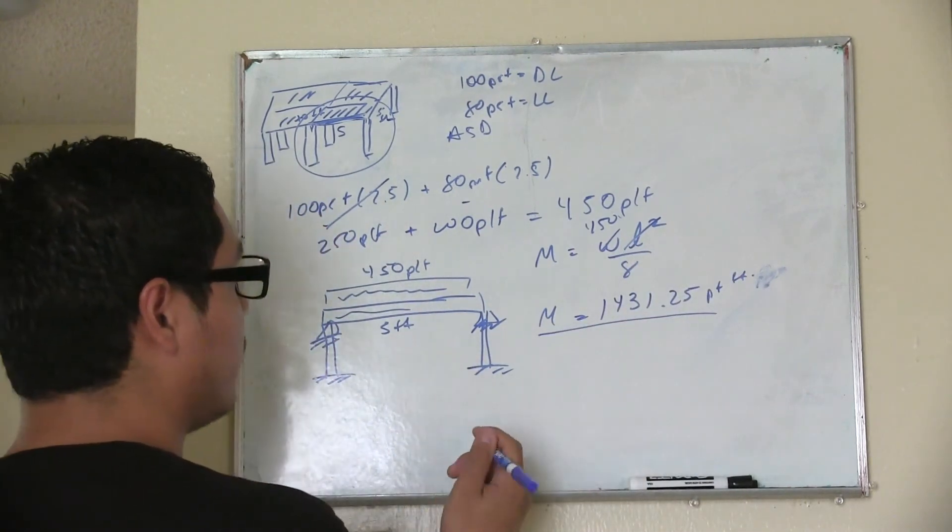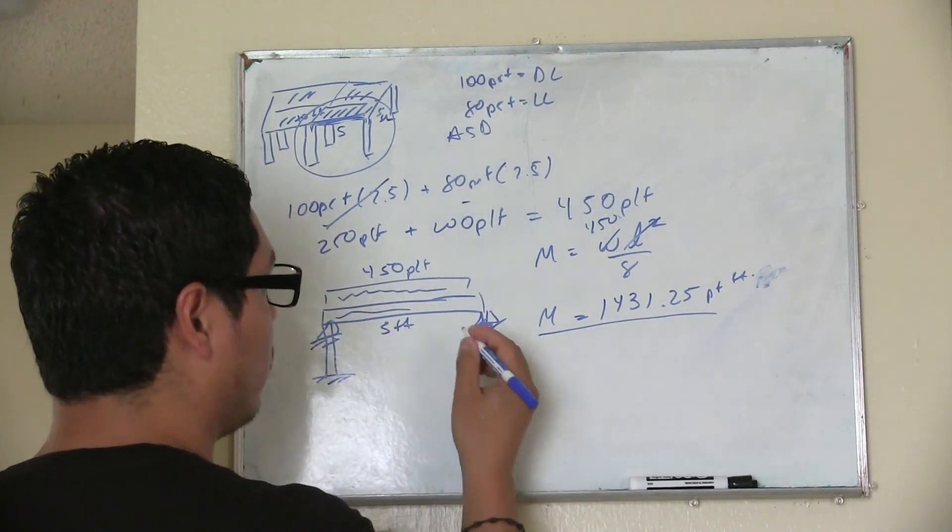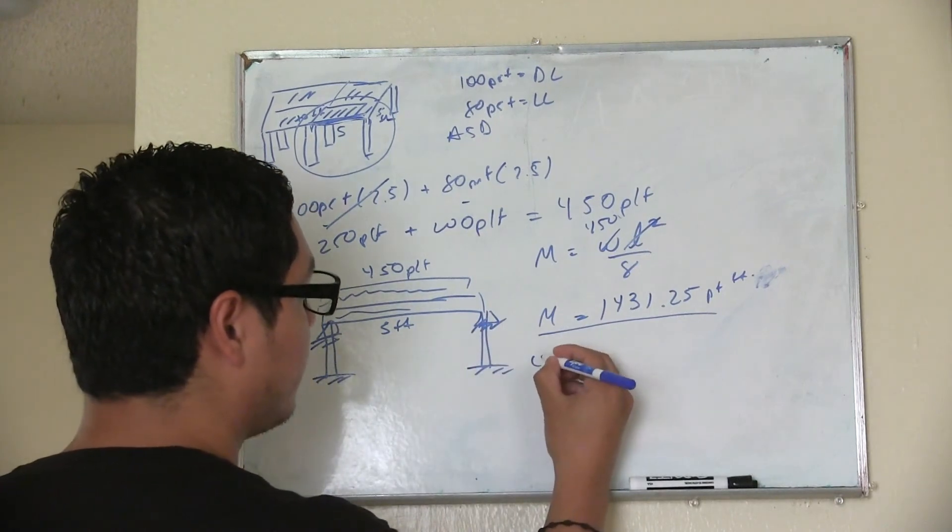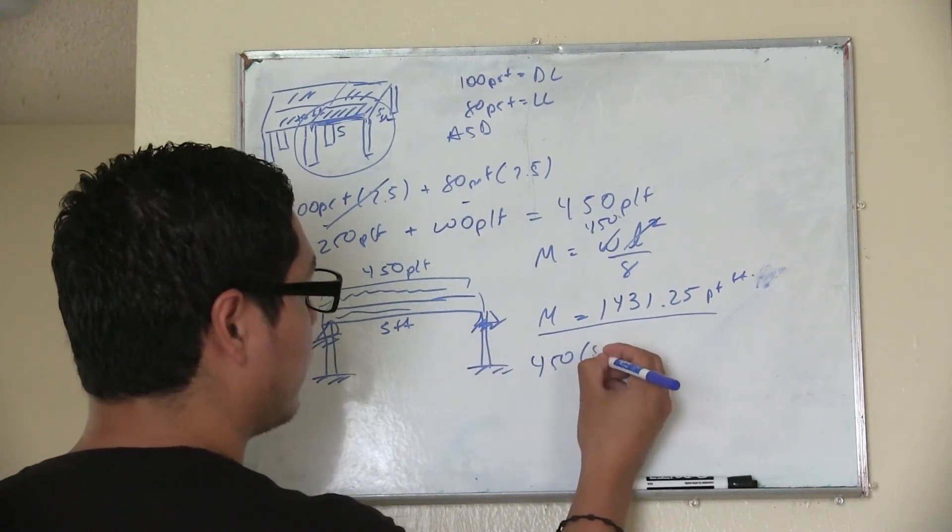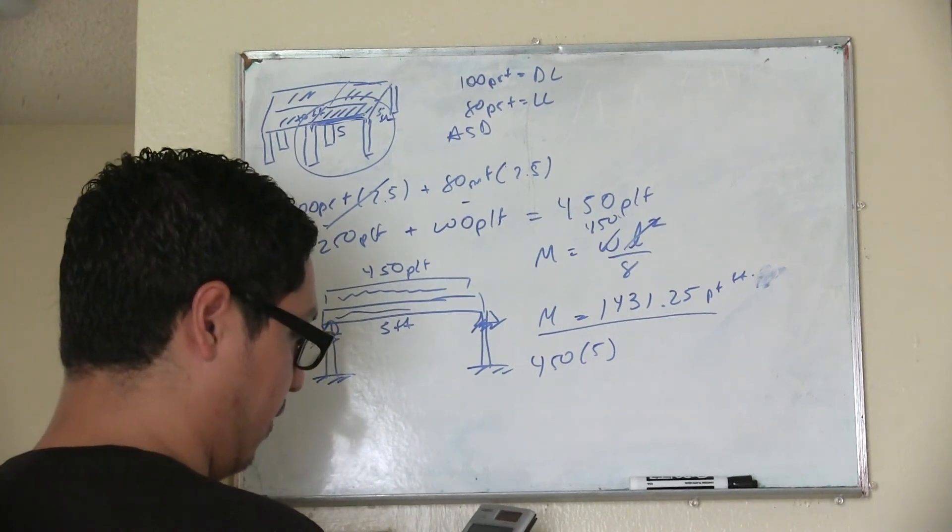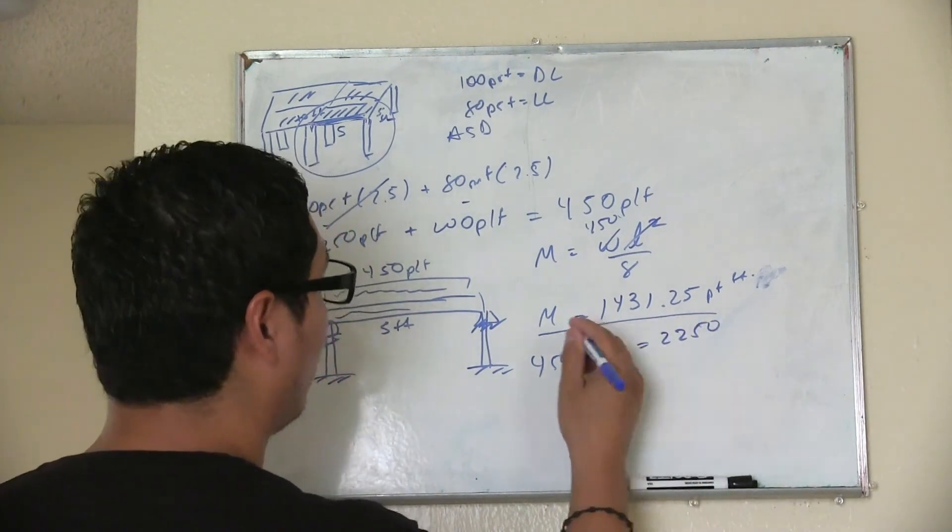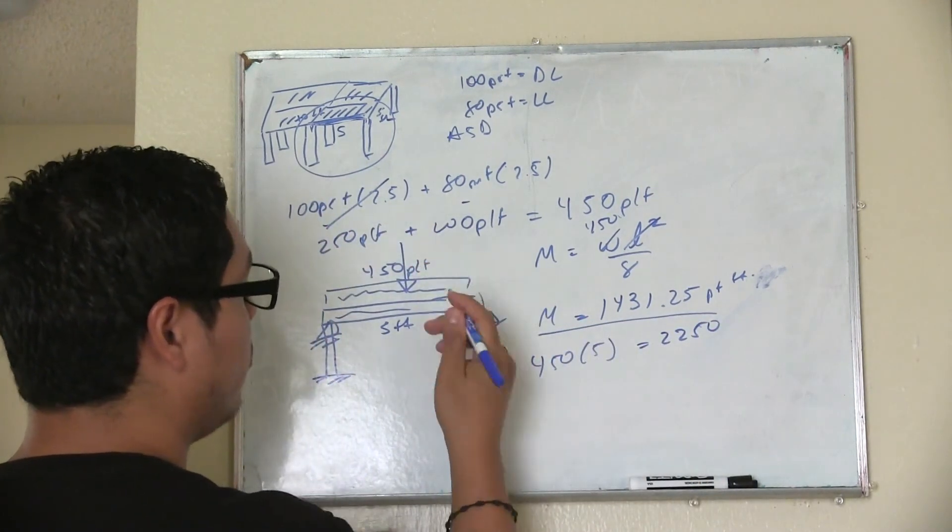Now for your reactions and for your shear design, what do you need to do? You can calculate the reactions. So let's say 450 times 5 gives you a total of 2250. So you're converting this load into a point load in case you're not.